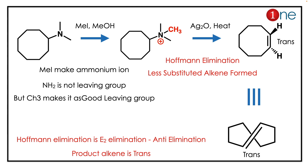Then you react with silver oxide and heating, which performs a pyrolysis-type elimination. It eliminates via E2 elimination, so it forms a trans product — it's a trans alkene.